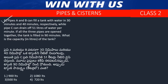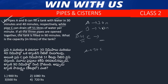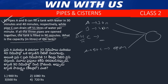Question number 6. Pipes A and B can fill a tank in 30 and 40 minutes respectively. Pipe C can drain 51 liters per minute. When all three pipes are open together, the tank fills in 90 minutes. What is the capacity of the tank in liters?